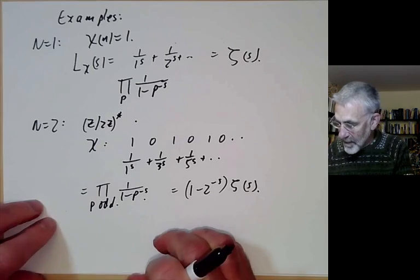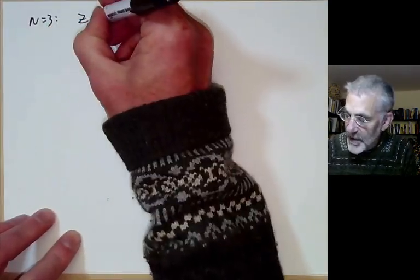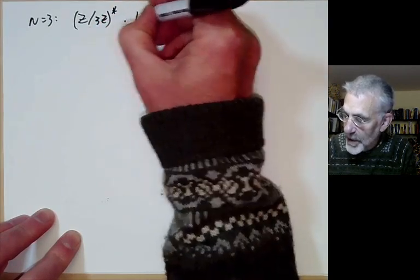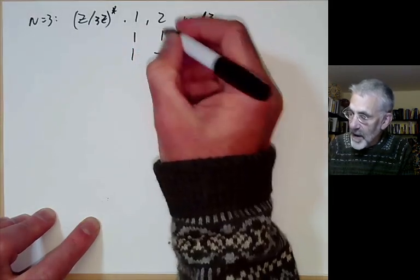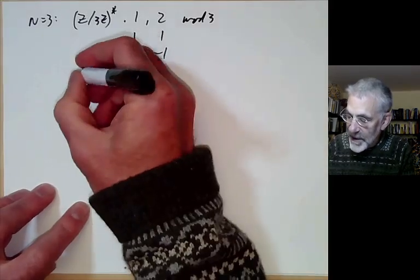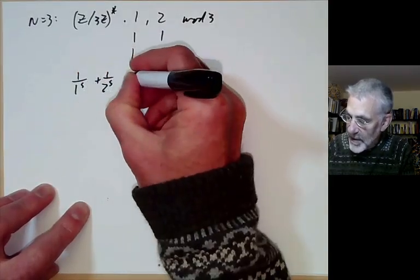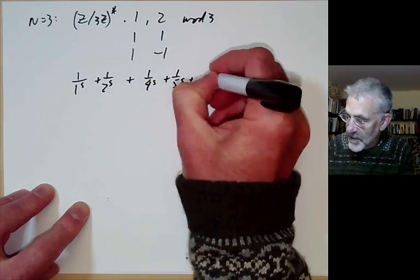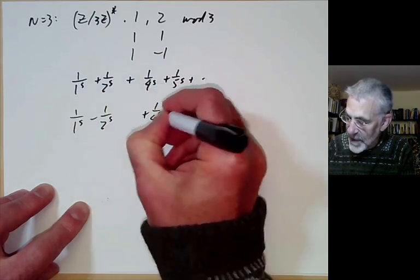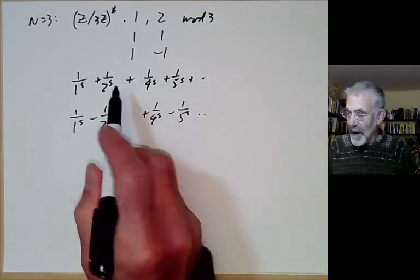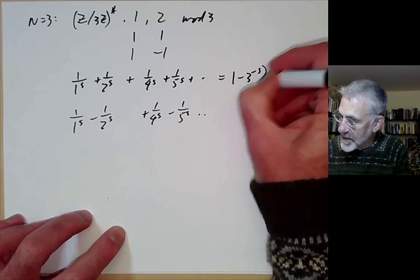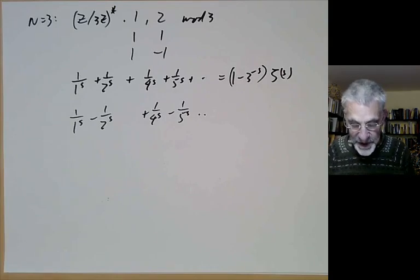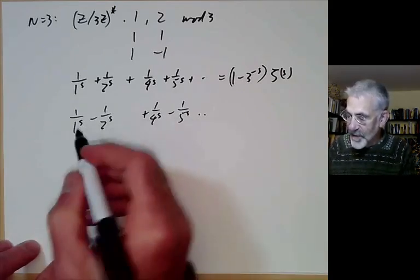For n equals 3, Z modulo 3Z star has two elements, 1 and 2, and there are two possible characters. The first gives 1 over 1 to the s plus 1 over 2 to the s plus 1 over 4 to the s plus 1 over 5 to the s and so on, which again is essentially 1 minus 3 to the minus s times zeta(s) — not terribly interesting. The second gives 1 over 1 to the s minus 1 over 2 to the s plus 1 over 4 to the s minus 1 over 5 to the s and so on, which is a genuinely new L-series.